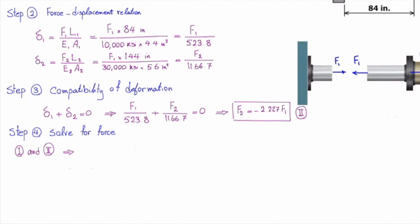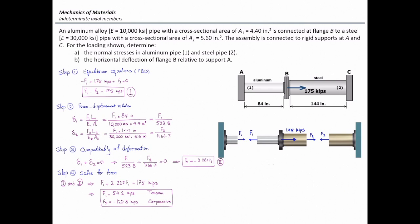And finally, solve it for force. Combining equations one and two gives us F1 equal to 54.2 kips positive, and F2 equal to 120.8 negative. Okay.